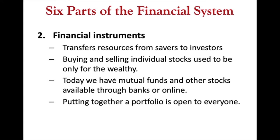For example, you can buy corporate bonds from General Motors — in that case, you have lent money to General Motors. Resources have gone from your bank account to General Motors, and you get interest in return. Financial instruments can also transfer risk from one person to another: if you buy car insurance, you transfer the risk that in the event of an accident you'd have to pay for damages from yourself to the insurance company.